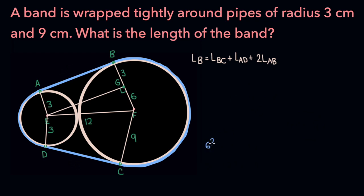So we have 6 squared plus GE squared equals 12 squared. And so GE squared is 12 squared, which is 144, minus 6 squared, which is 36.